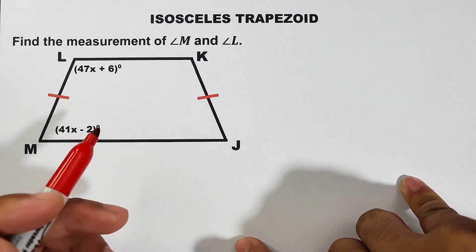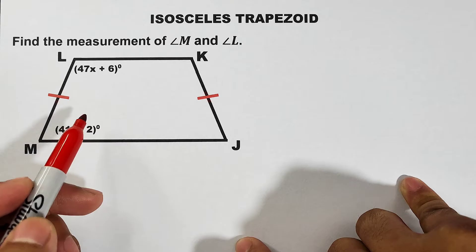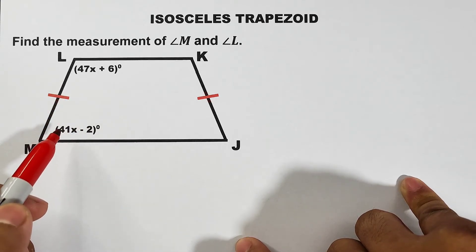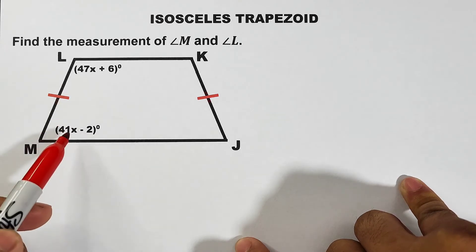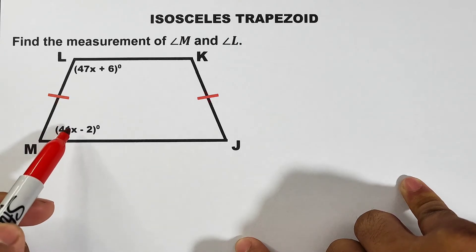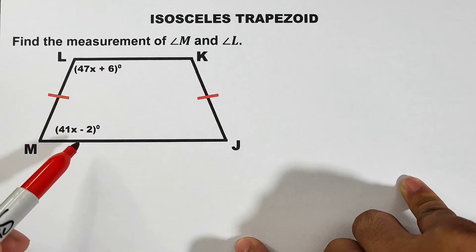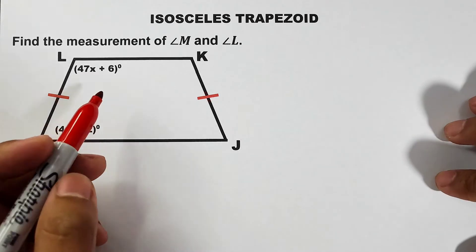How are we going to find the measurement of these angles? These angles are the leg angles of this trapezoid. A key property states that the leg angles of isosceles trapezoids are supplementary. Since they're supplementary, we can add them up and that is equal to 180 degrees. So let's create an equation.